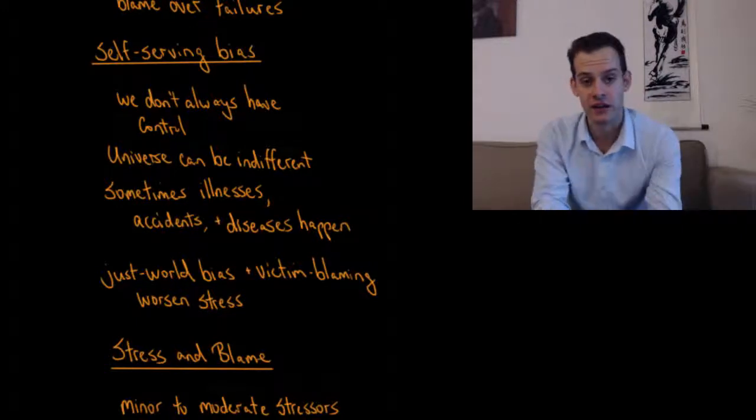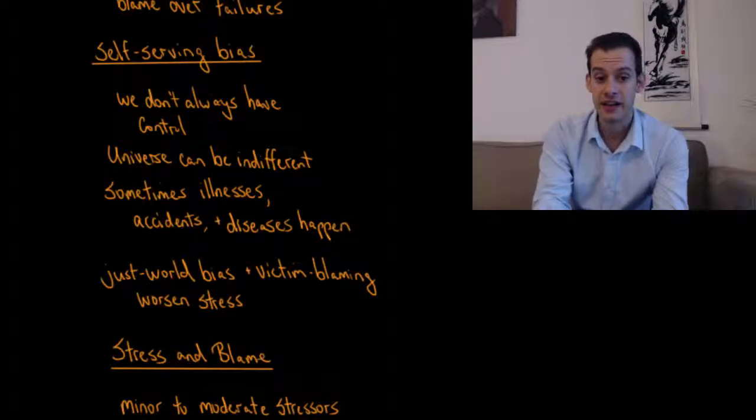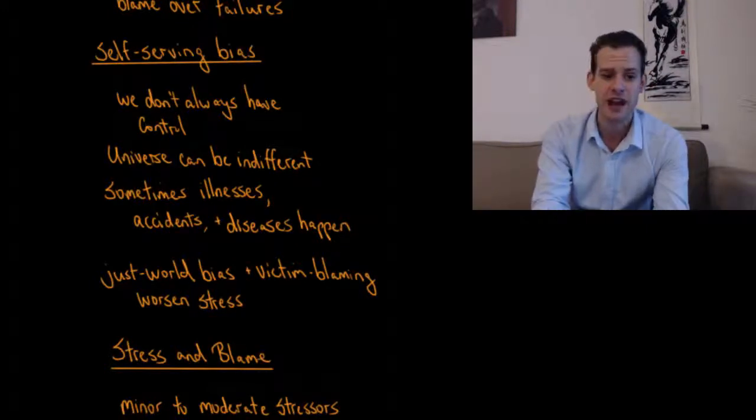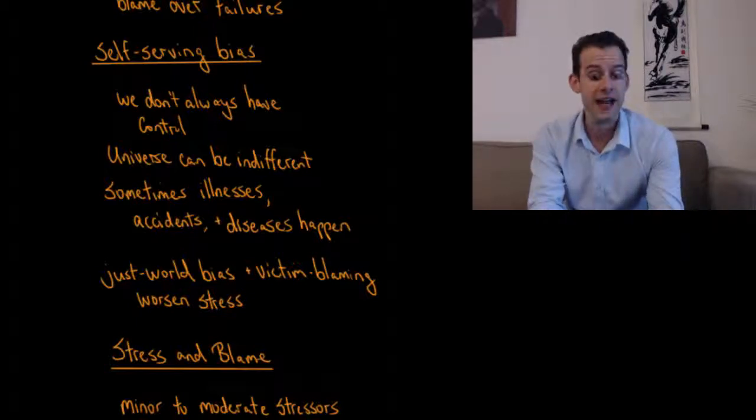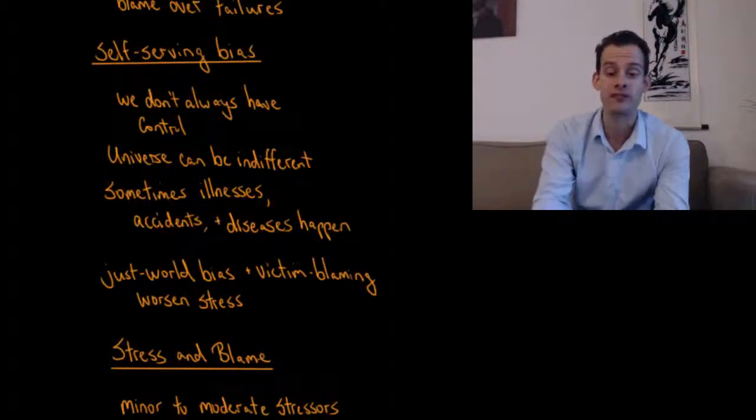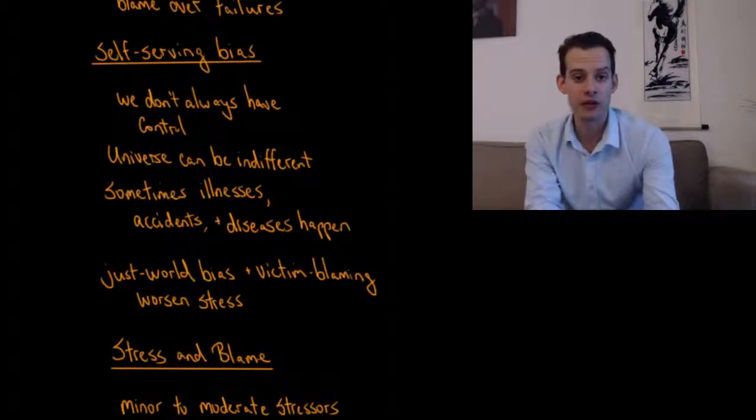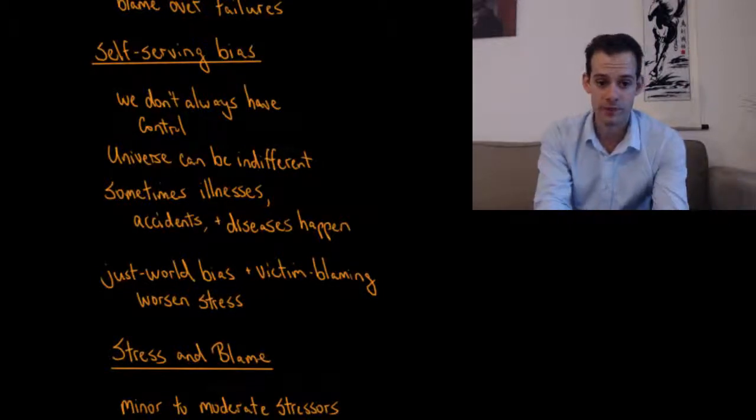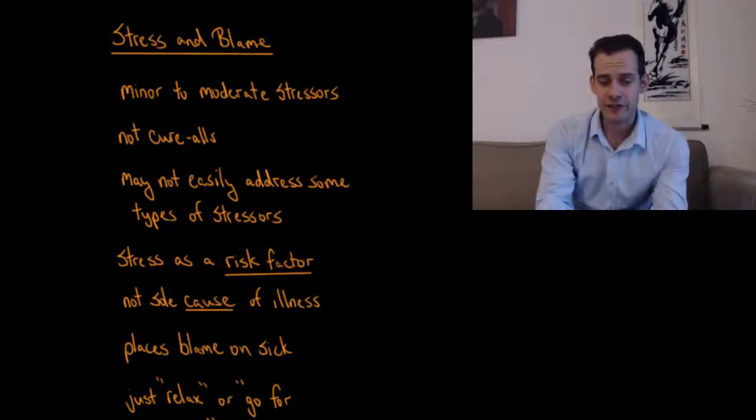We want to avoid the just world bias that I talked about in a previous video, because it leads us to blame victims. And this can be the case when we think about diseases. We can have a feeling that people who are sick deserve their illness for some reason or another, perhaps one we don't fully understand, but we might think that they're to blame for developing this if they had just acted differently. And the problem is this can worsen the stress of people who are suffering. People who are suffering from some illness if we also have a tendency to blame them for their illness or for the accident that was actually outside of their control.